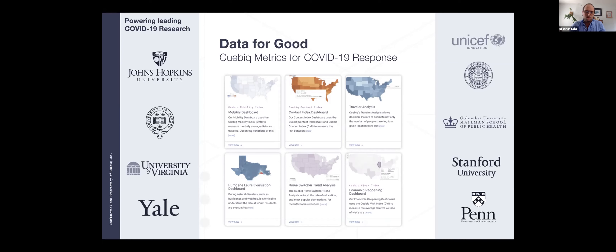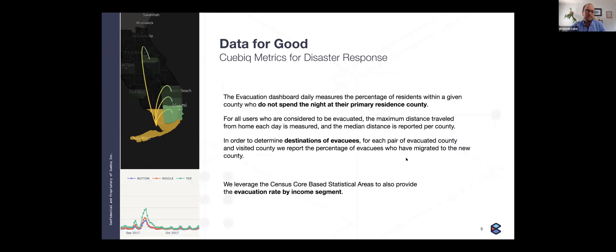The world began asking questions that mobility data could answer: how often are people coming together in close physical proximity, how do people travel between cities, how is this affecting economic activity, and how does inequality affect the ability of different people to adhere to non-pharmaceutical interventions? Together with academic partners and our data scientists, we developed multiple aggregate metrics — including a simple mobility index measuring median distance traveled at the county level, and a rate of close proximity contacts in a privacy-preserving way.